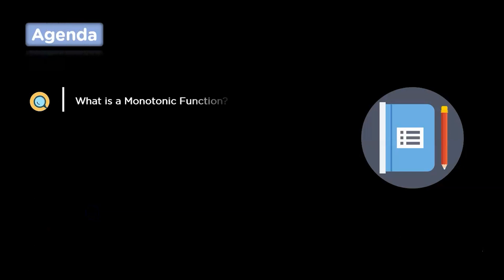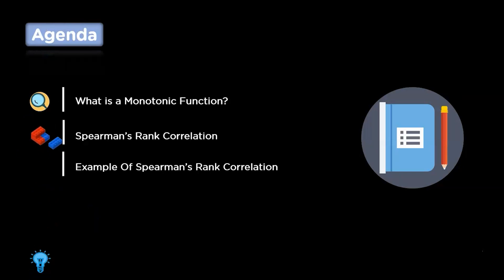We'll start this tutorial by discussing the monotonic function. Then we'll move on to discuss Spearman Rank Correlation and the formula for calculating Rank Correlation. Then we'll work on an example to get a clear understanding of the topic. So let's get started.